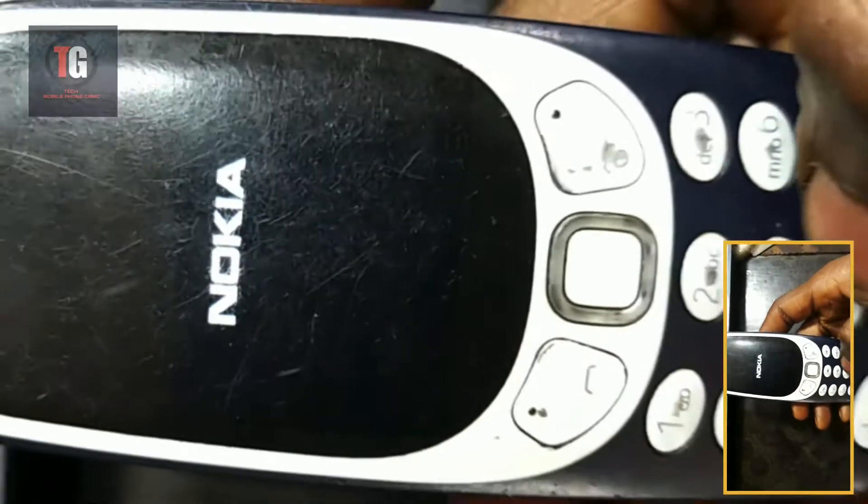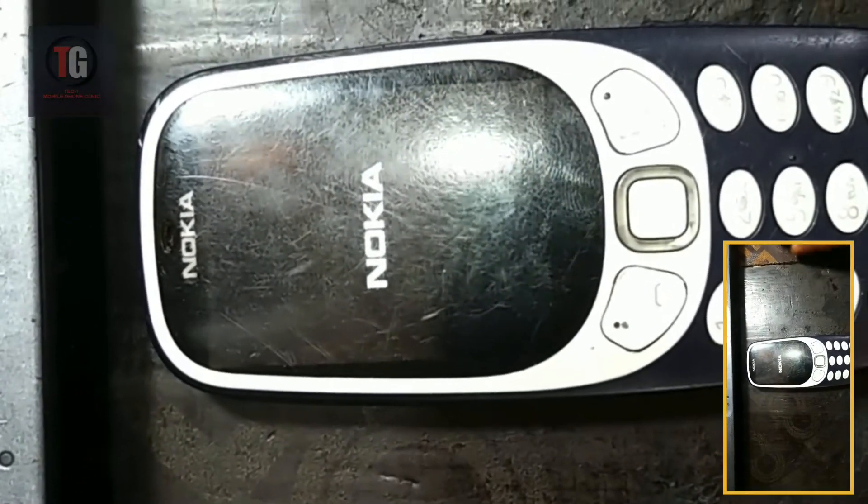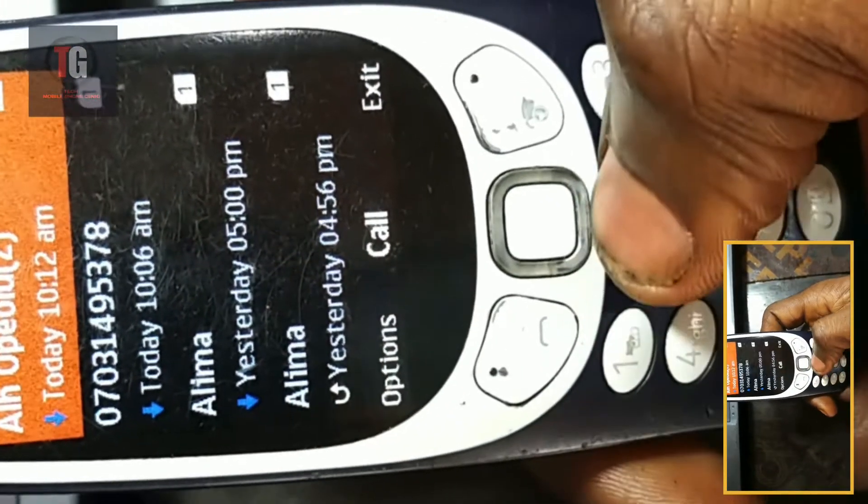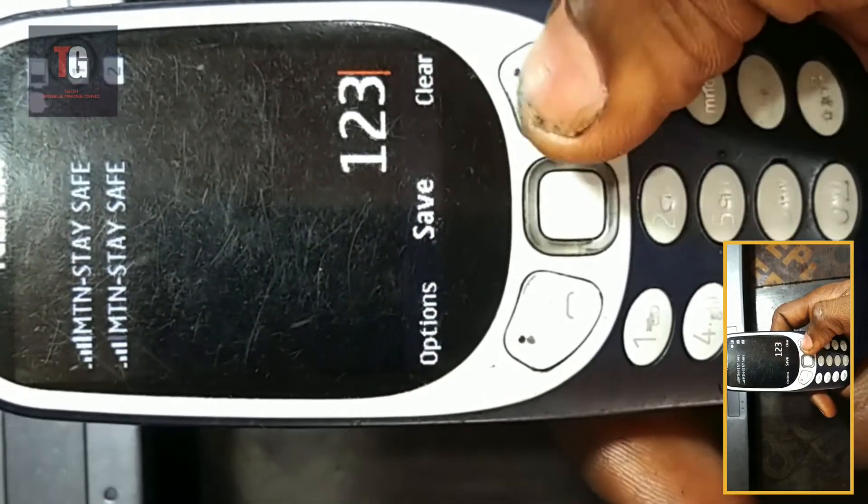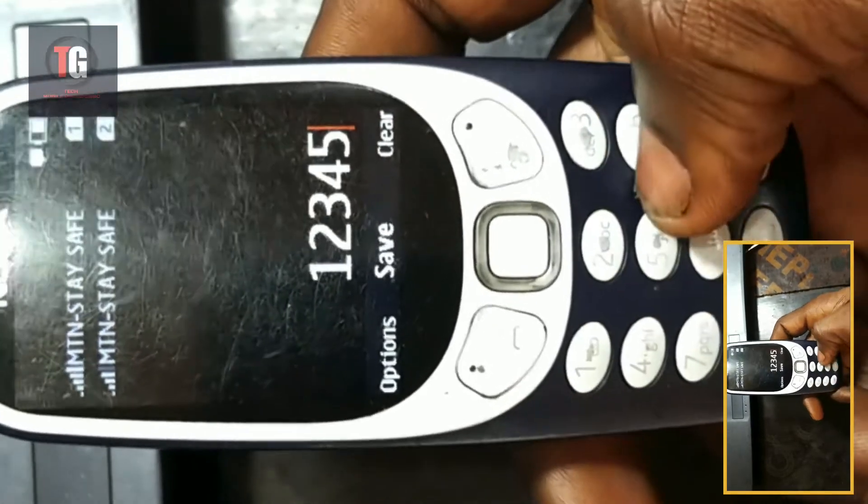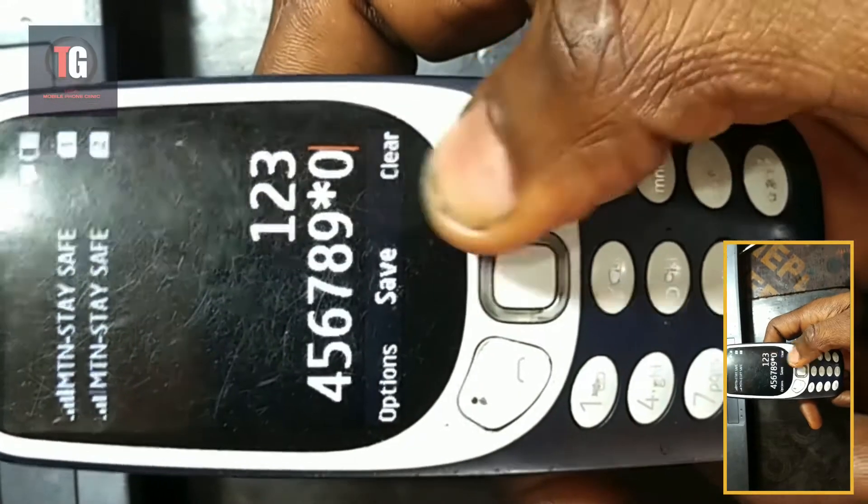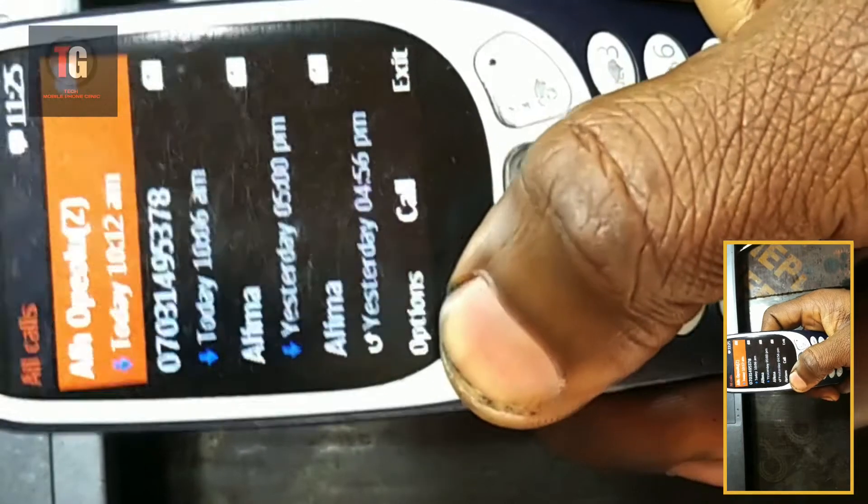Now let's test if our phone is going to work now. You can see our keypad one, two, three is functional now. So guys, if you like this video, don't forget to like and subscribe. This is Studio Tech Mobile Phone Clinic. Thank you for watching.